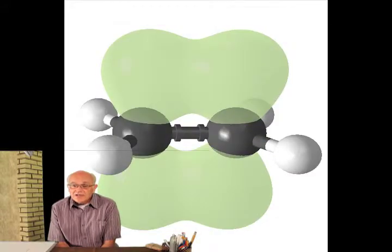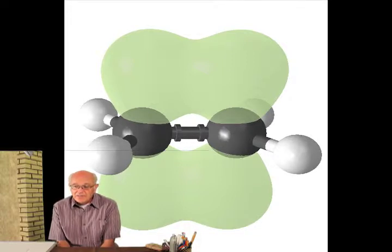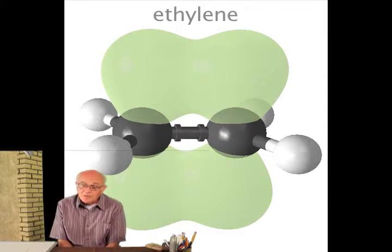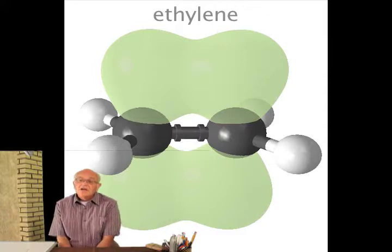...the clouds on top see each other and the clouds on the bottom see each other, making a half a bond on top, a half a bond on the bottom, and a full regular covalent bond through the middle — resulting in a double bond.